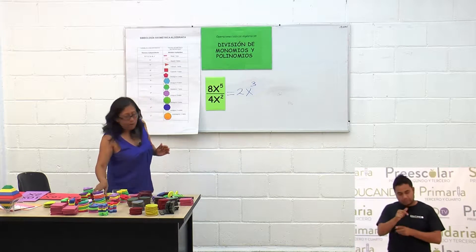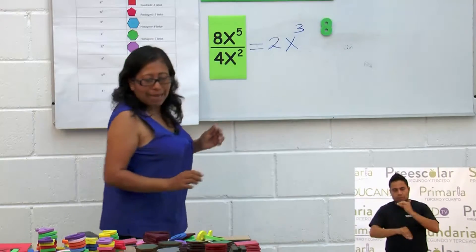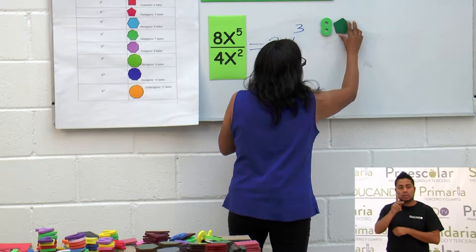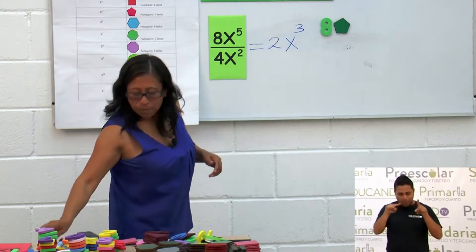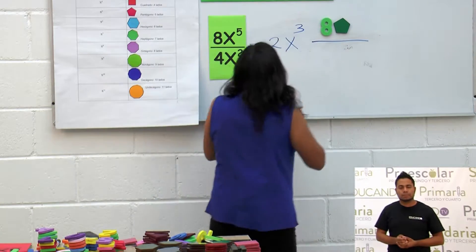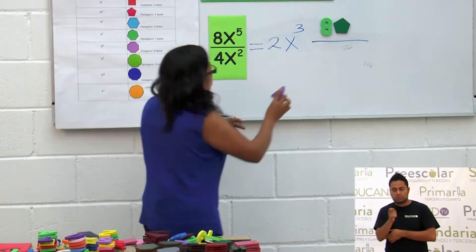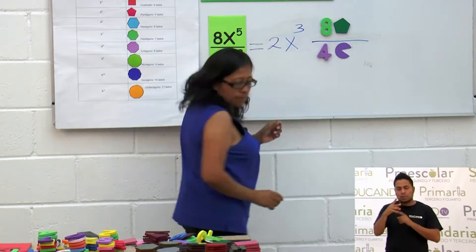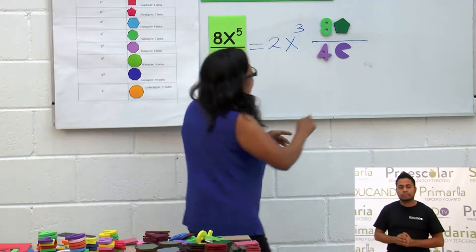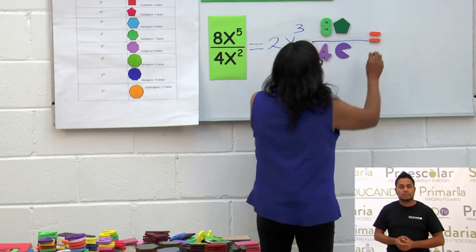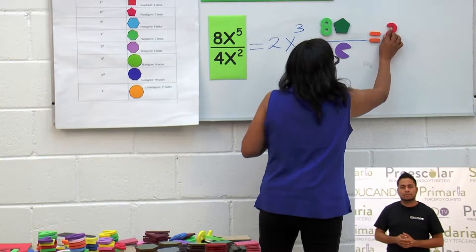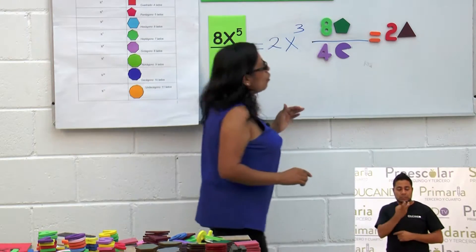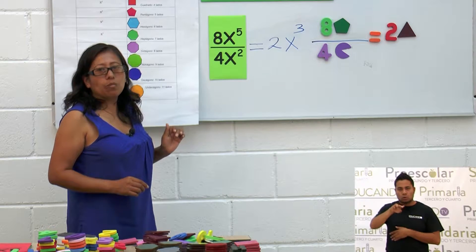Lo adecuamos a la nueva metodología: ponemos 8. En lugar de x quinta, vamos a poner una figura que tiene 5 lados, que es el pentágono. 8 pentágonos entre 4 ángulos. Esto es igual a 8 entre 4, que es 2. Y 5 menos 2 es 3, representado como 3 triángulos. Ese es el resultado de esta división de monomio entre monomio.